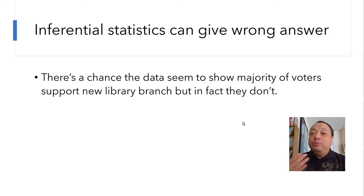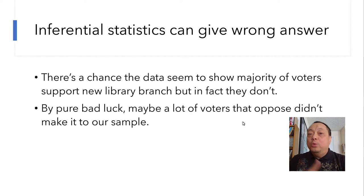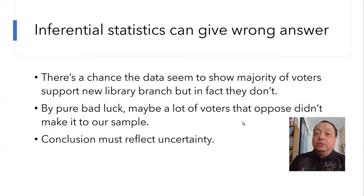Because maybe by pure bad luck, when we went out and collected our sample, a lot of the voters that oppose the new library branch somehow did not make it to our sample. So, as a result, any conclusion that we draw in inferential statistics must reflect at least some level of uncertainty.